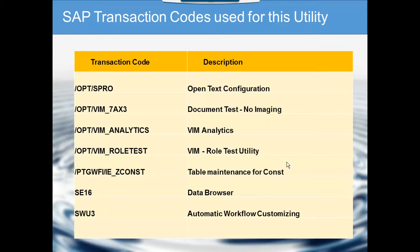The next one is the role test utility. This is where we can put a VIM document number and check which role it is going to and why.